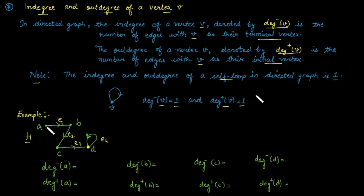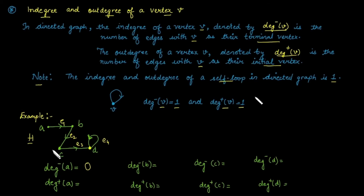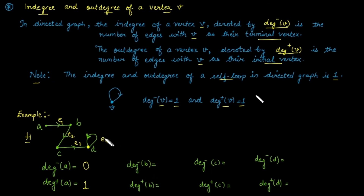In-degree of vertex a: how many edges have a as terminal vertex? The answer is zero. Out-degree of vertex a is one, because a1 is an edge whose initial vertex is a. In-degree of vertex b is one, and out-degree of vertex b is also one.